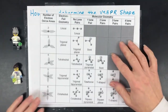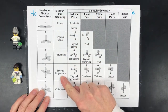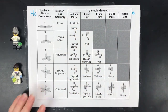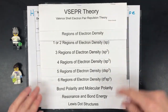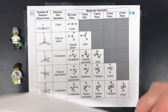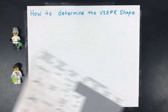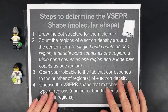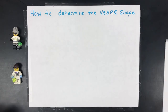Many students will use a chart to determine the electron pair geometry and molecular geometry. My students make a foldable where the inside shows those molecular shapes and examples. Let's get started with some examples so you understand how to determine the VSEPR shape.